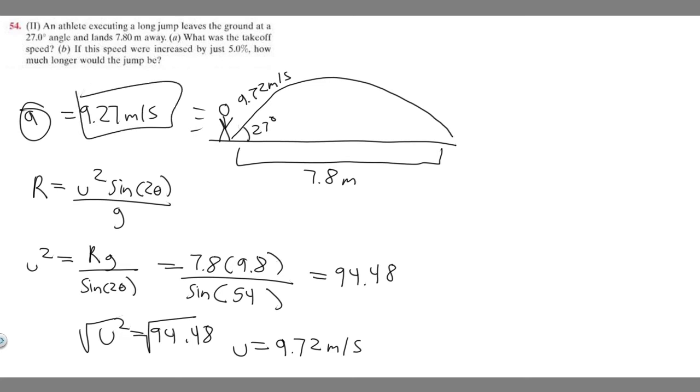Now let's move on to part B. B says, if this speed were increased by just 5%, how much longer would the jump be? In this case, we're trying to find how much longer the jump would be, so we're trying to find a distance.